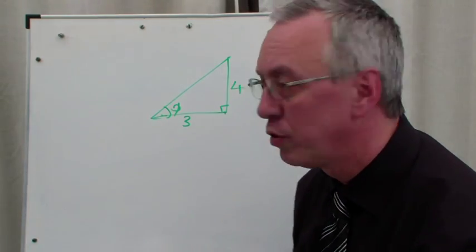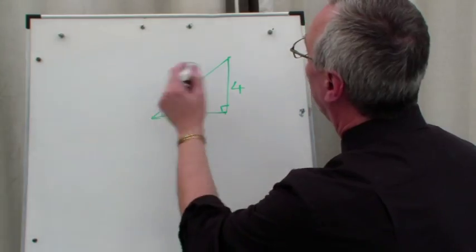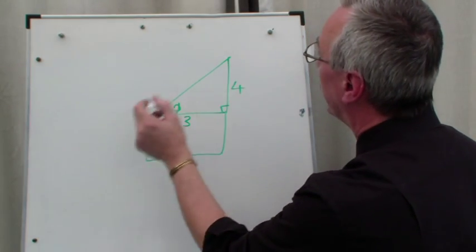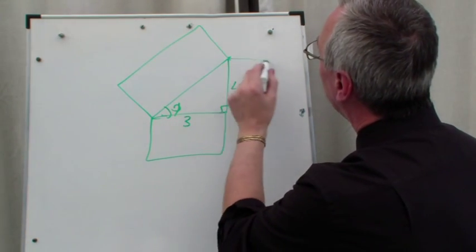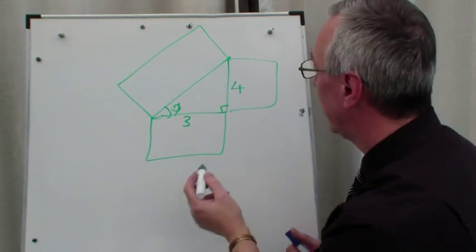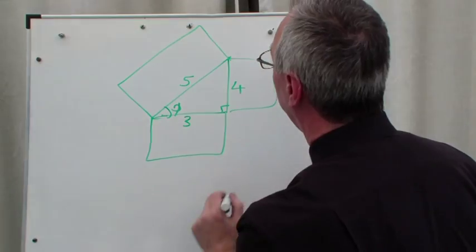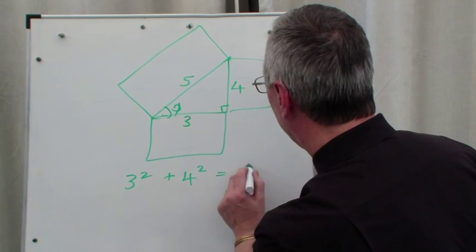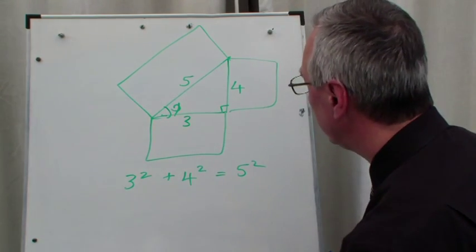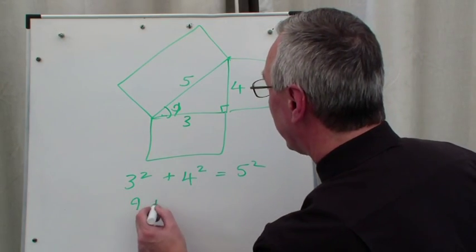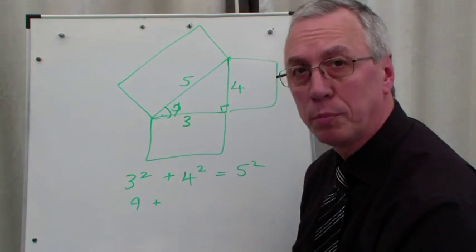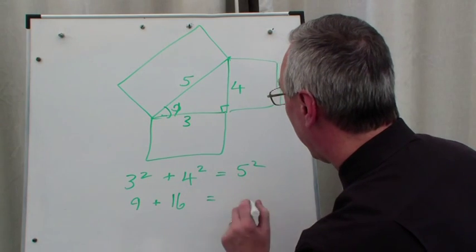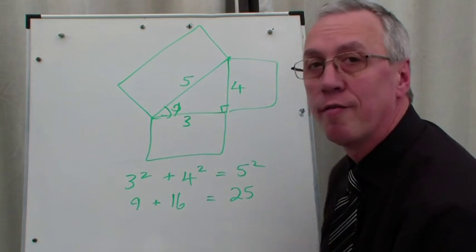Pythagoras' rule, which many of you will already know. This line here is called the hypotenuse, and Pythagoras' theorem says that the square on the hypotenuse is equal to the sum of the squares on the other two sides. So if I was to write that down, we would have 3 squared plus 4 squared equals 5 squared. 3 squared is 9, 3 times 3. When a number is squared, it just means multiplied by itself. 3 times 3 is 9, 4 times 4 is 16. 16 and 9 are 25, which is 5 times 5.